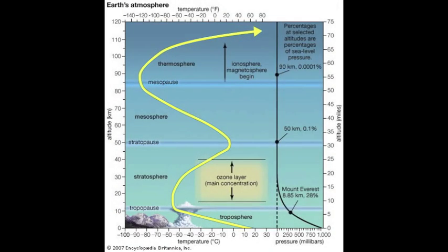The first layer is the troposphere, where most of the Earth's air mass is found. It is the thinnest and also contains the air we breathe. It's followed by the stratosphere, which has the most ozone, the mesosphere, the thermosphere, and the exosphere.